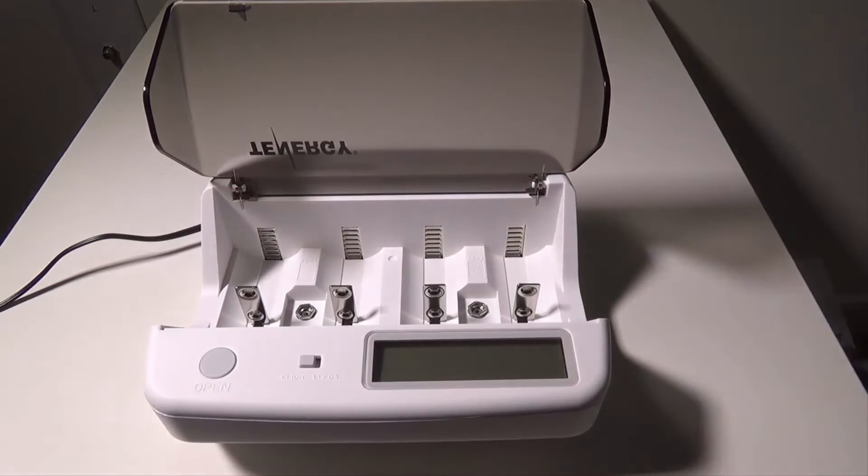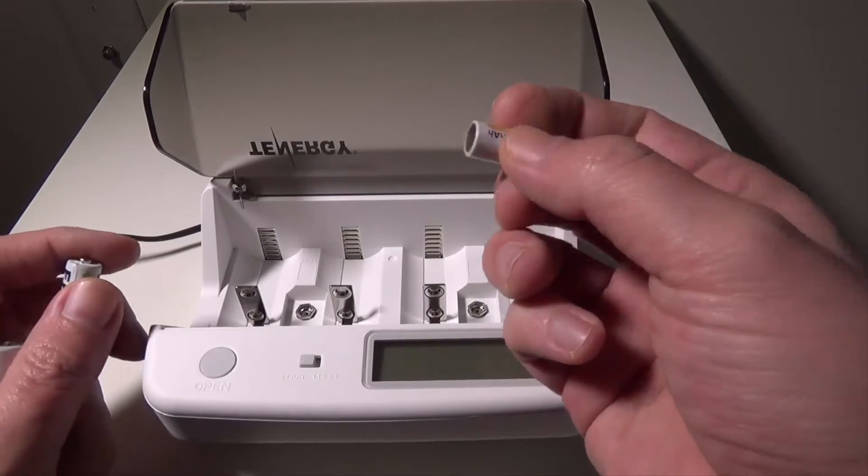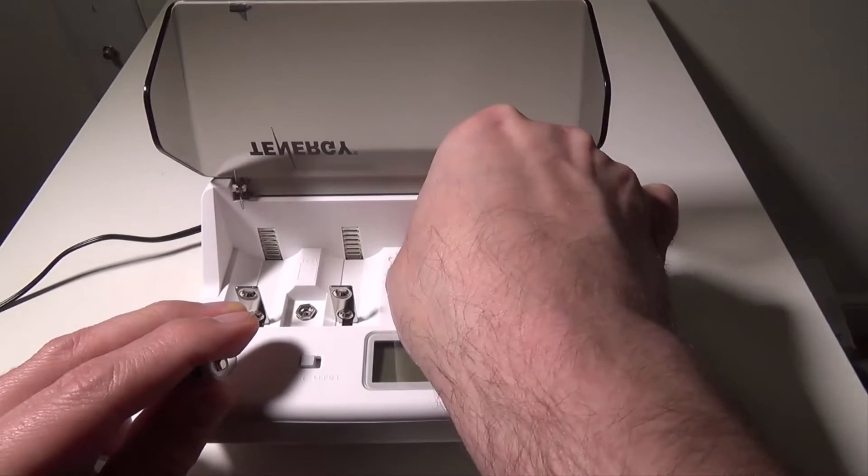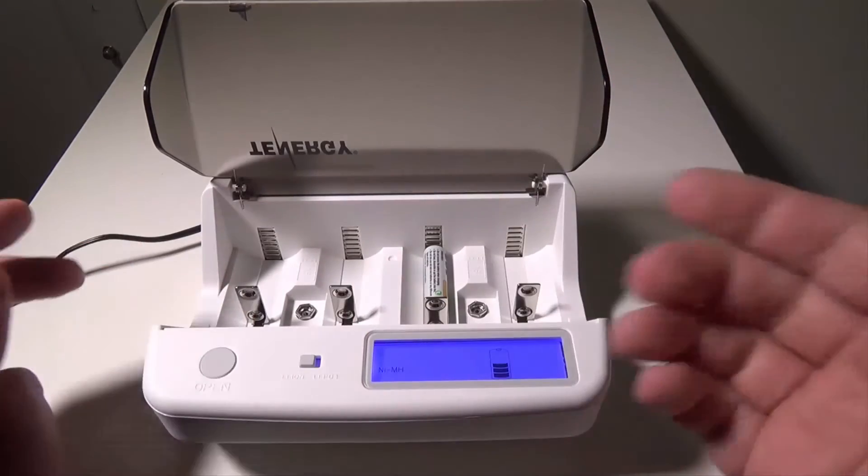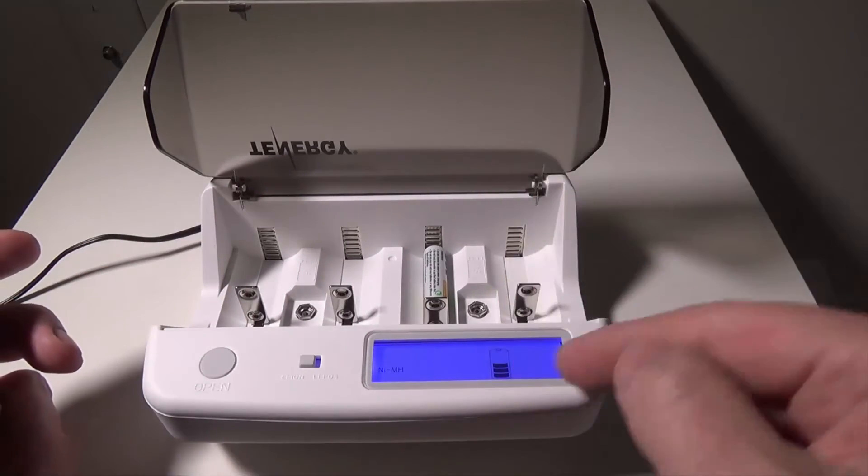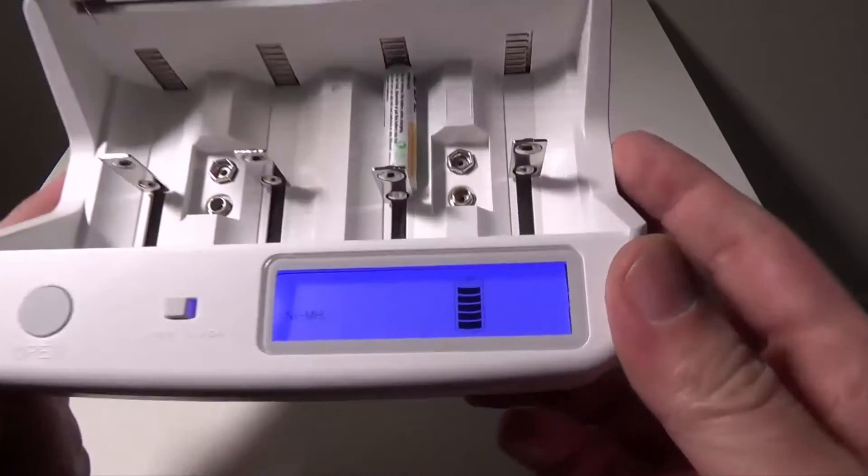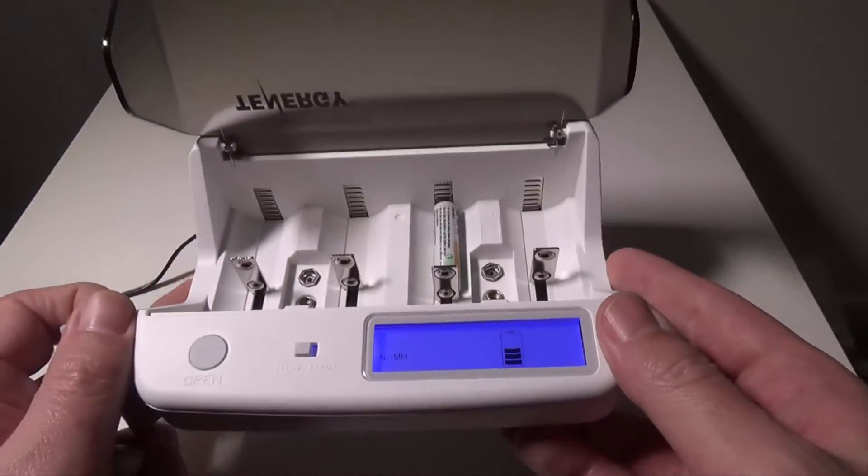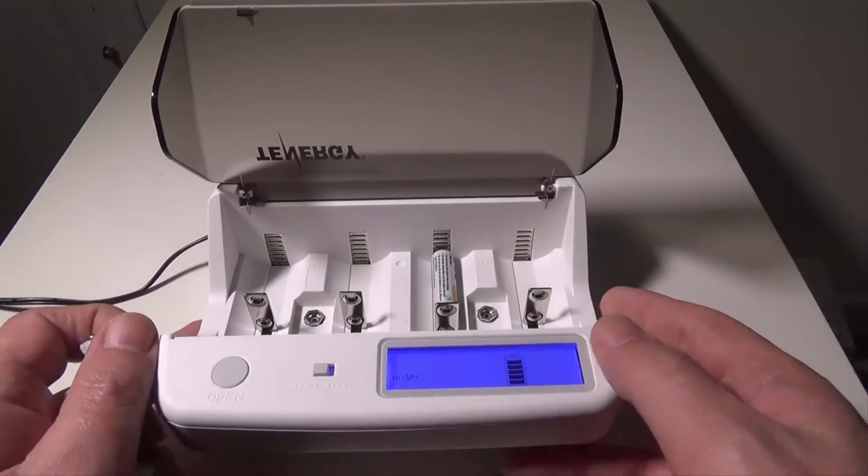So we'll open this up and we'll put in a couple different batteries. I've got some double-As and I've got some triple-As - these are EBL batteries. But very simple to go here, you just kind of slide it in and let it go. And you're going to see that the third bay now has a battery indicator here and it is charging up.